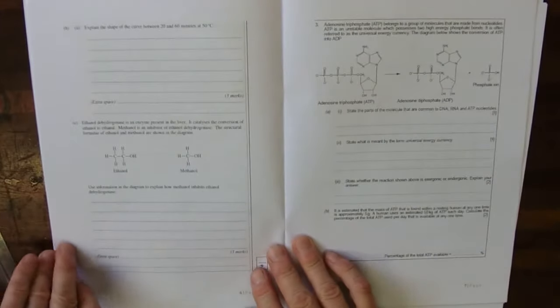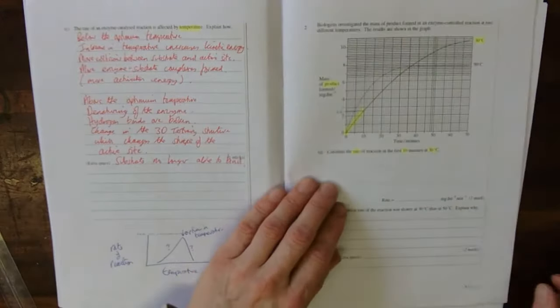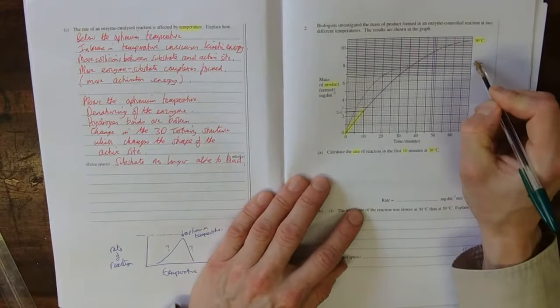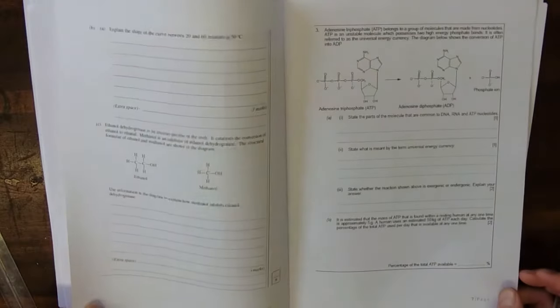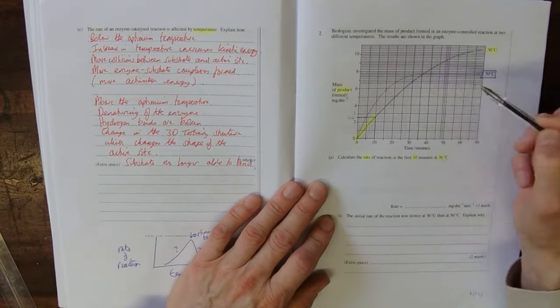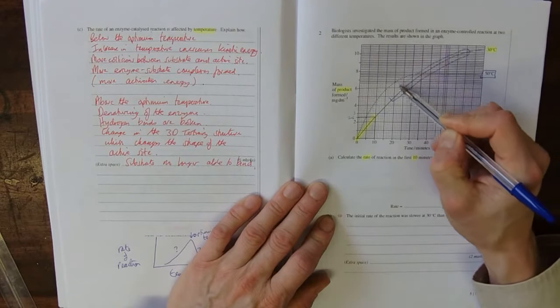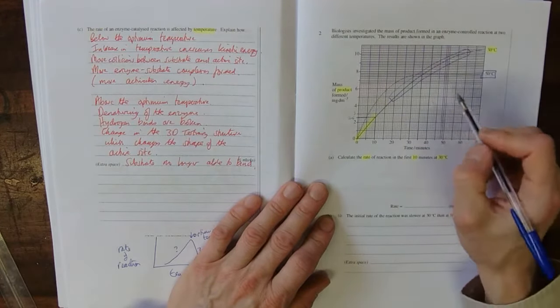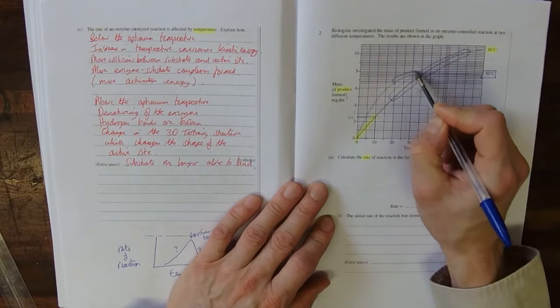And explain the shape of the curve between 20 and 60 minutes at 50. So now we are looking at the 50. I'll do this in blue. The 50 and between 20 and 60 minutes. So between 20 and 60. So you're looking at this bit of the curve here. And what happens? Actually, wrong one. 20 and 50, yeah, it's this one. There you go.